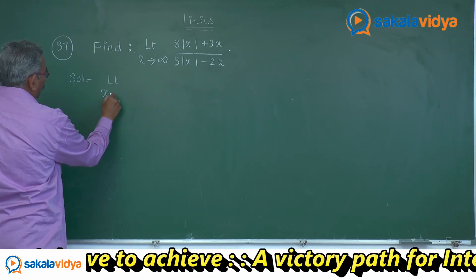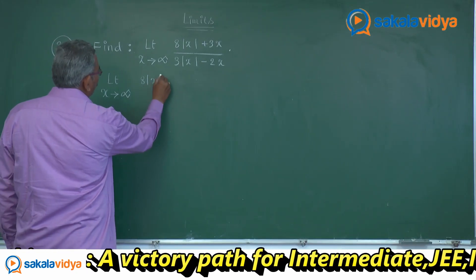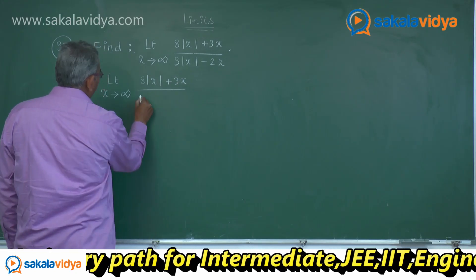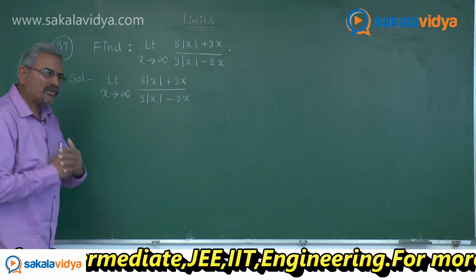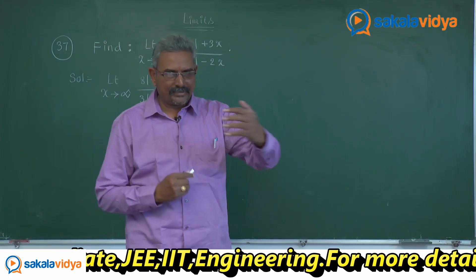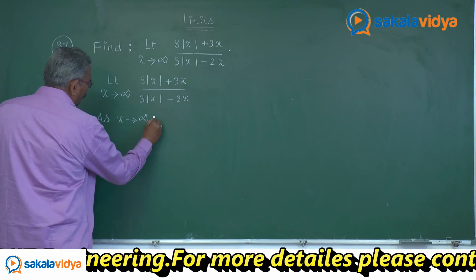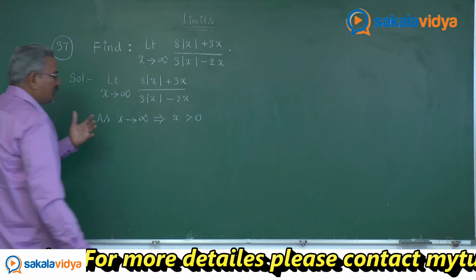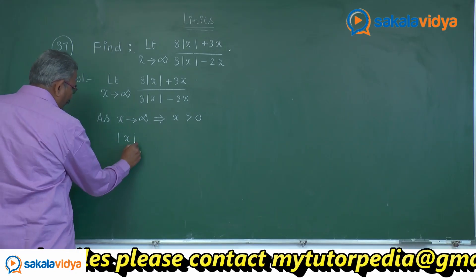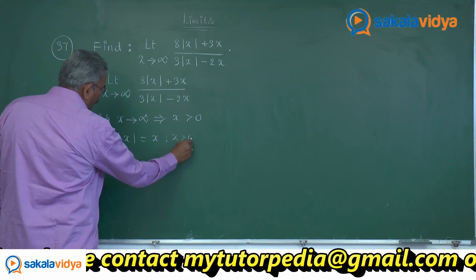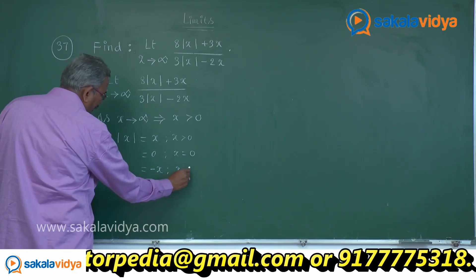Now the formal solution: limit as x approaches positive infinity of (8|x| + 3x) divided by (3|x| − 2x). Here we have to decide whether x > 0 or x < 0. As x approaches infinity, that implies x > 0. By the definition of the modulus of any real number: mod x equals x when x > 0, equals 0 when x = 0, and equals −x when x < 0.